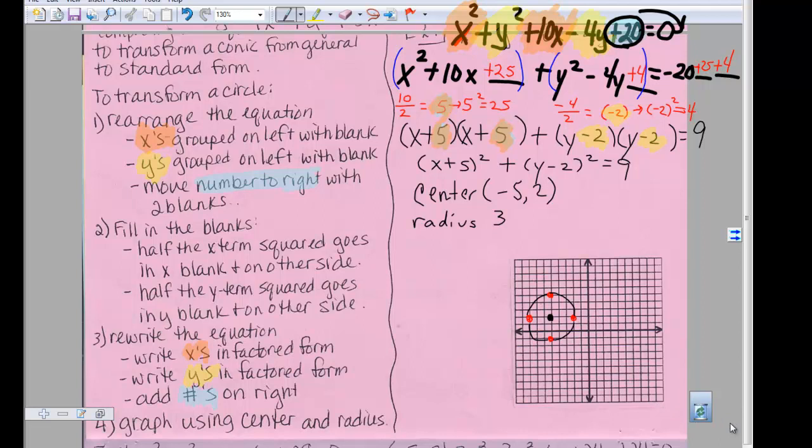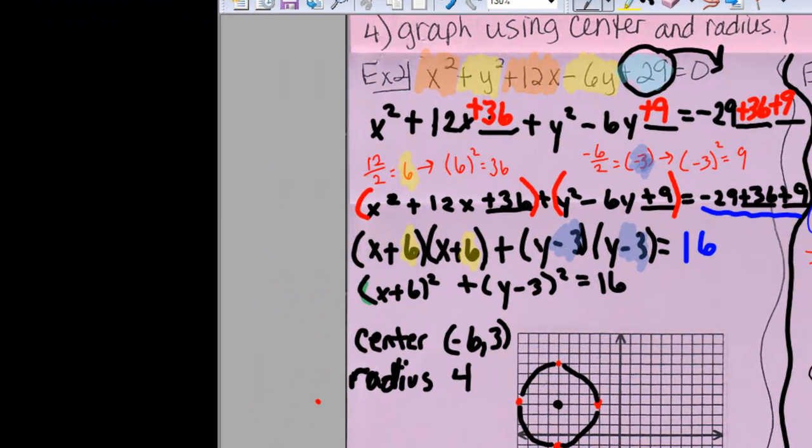At this point, we have x squared plus y squared plus 12x minus 6y plus 29 equals 0. So we gathered the x's together first and left a blank. We gathered the y's together and left a blank.